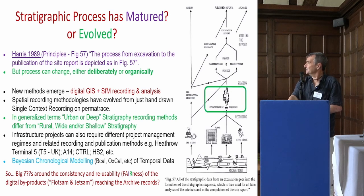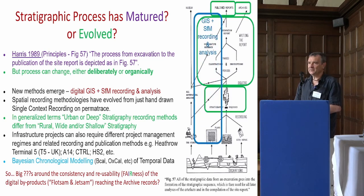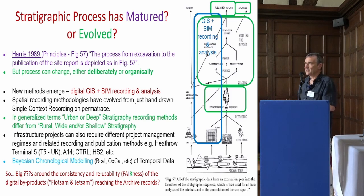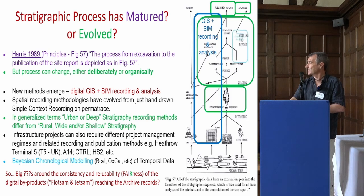This is how Harris did it — the old school approach: you've got the stratigraphy on site, you analyse it, write the report, publish it, put it in the archive. But I would argue things have changed now. A lot of people are out there doing GIS and SfM-type recording, and I'm really interested in how that has altered what ends up in the stratigraphic record. I think it makes a crucial difference to how people put their stratigraphic records together and publish them.